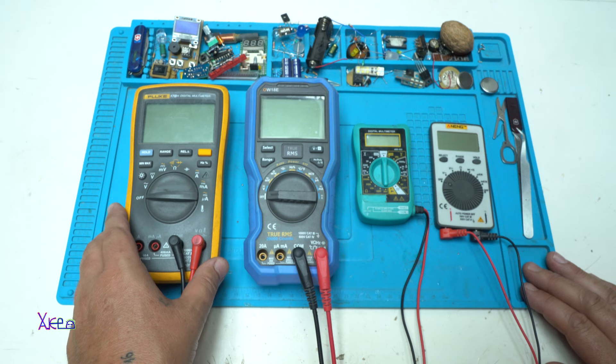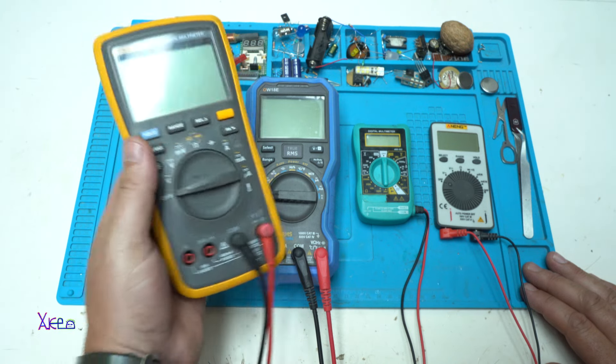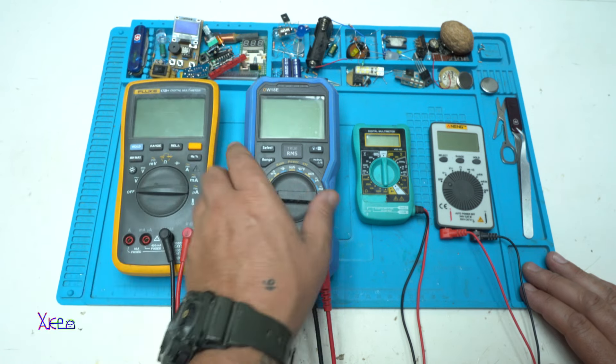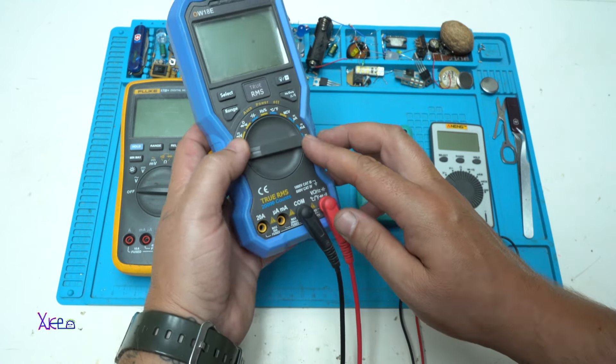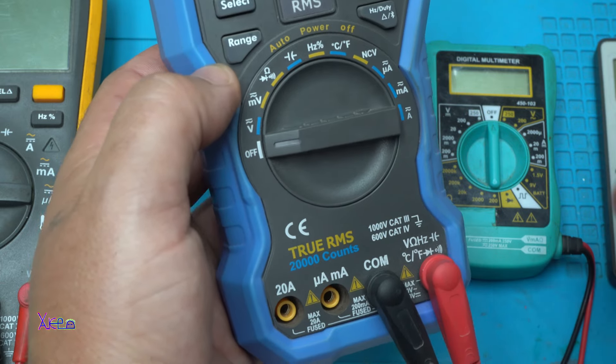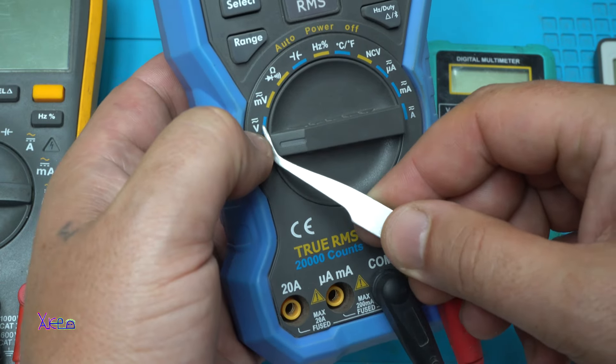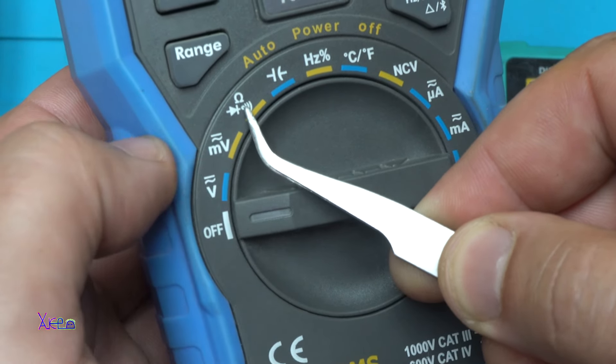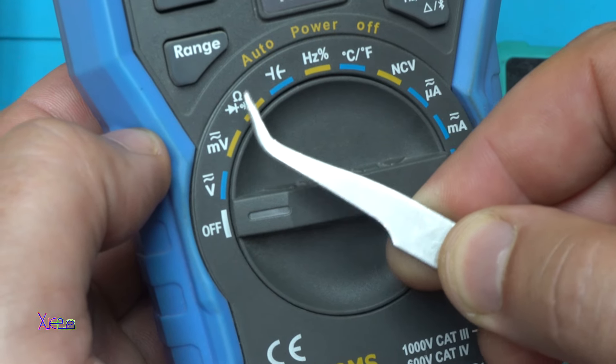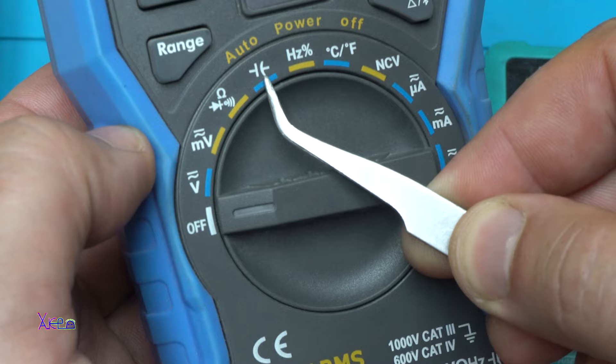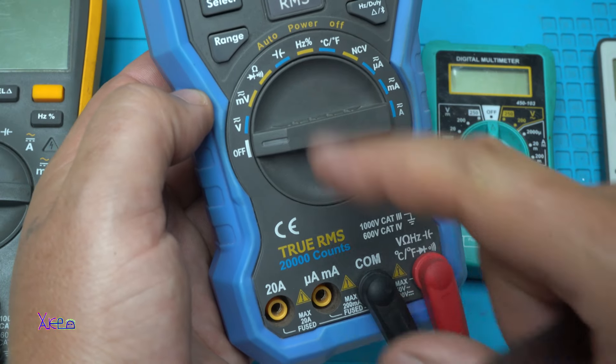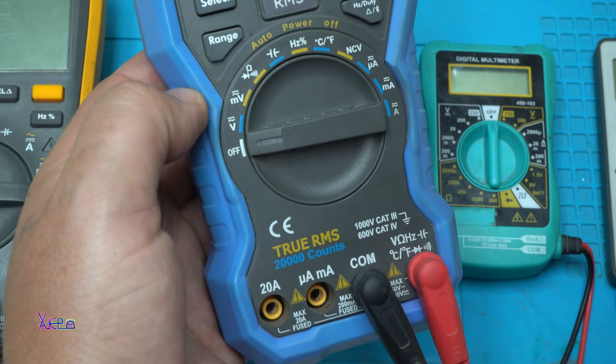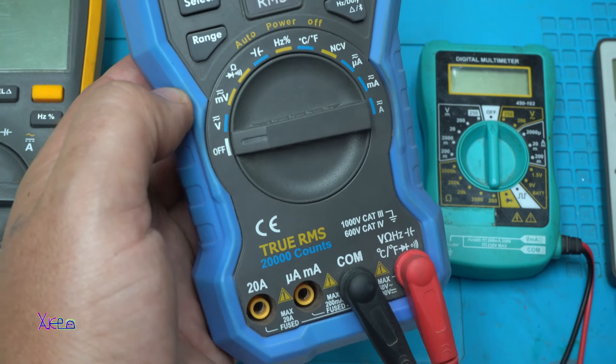One of my most used digital multimeters is this. It's a Fluke 17B Plus model. And let me explain the functions. Almost every digital multimeter have a measurement for AC voltage or DC voltage, millivoltage for AC and DC. You can measure resistance. You can check diodes. You can check capacitors. You can measure the hertz of the voltage. Some of the multimeters have to measure a temperature. And also most used function is measurement for current.